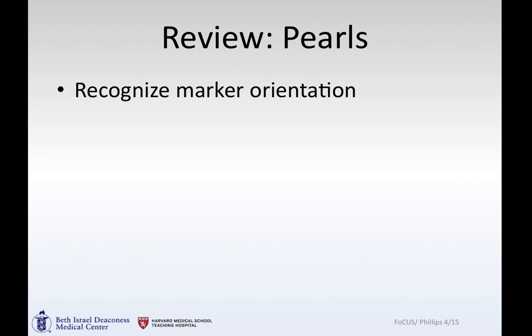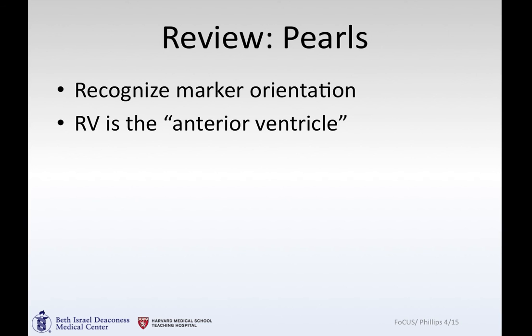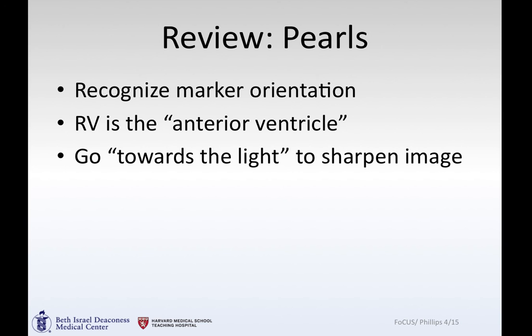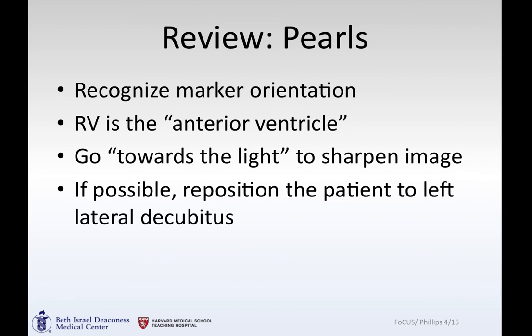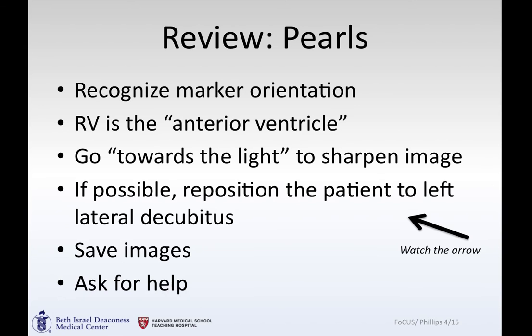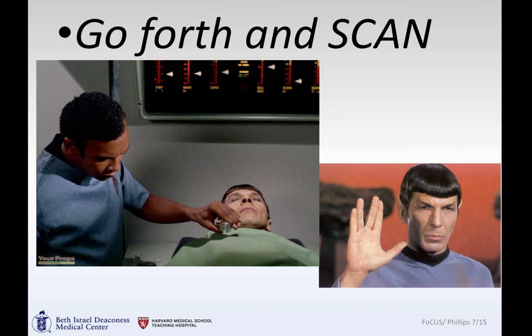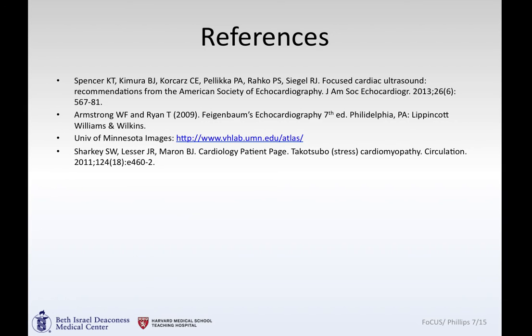To review: recognize the marker orientation. Remember the right ventricle is anterior — the thing you typically see first. Go towards the light to sharpen the image. In the parasternal long, get the aortic valve and mitral valve in the same view. You can always reposition the patient, specifically into left lateral decubitus, to see better. Save your images and ask for help. At this point we'll break — if you're with a group, go forth and scan. We'll see you in lecture number two.